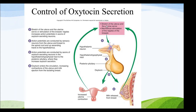Uterine contraction can cause stretching of the uterus and the uterine cervix, whereas mechanical stimulation of the nipples of the breast — all of these can activate the hypothalamic neuron to release and produce more oxytocin. The posterior pituitary then releases the oxytocin.